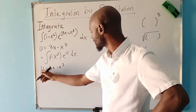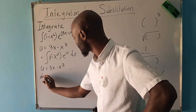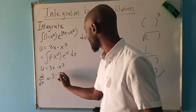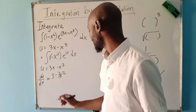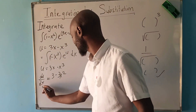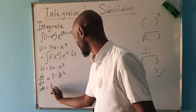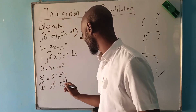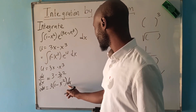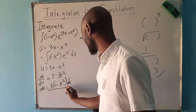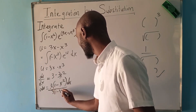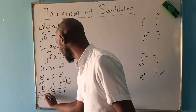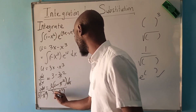We are going to differentiate u with respect to x. So du/dx = 3 − 3x². Now I can make dx the subject. So du = (3 − 3x²) dx, and I can factor out the 3. Then to make dx the subject, I divide through: dx = du / (3(1 − x²)).